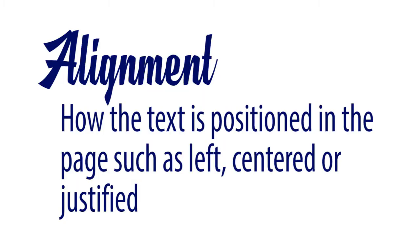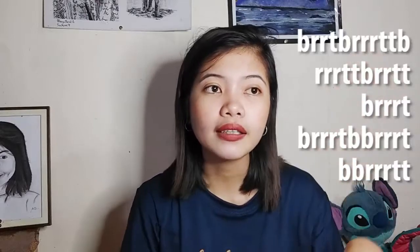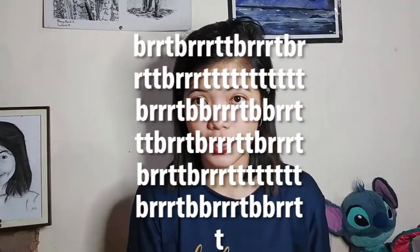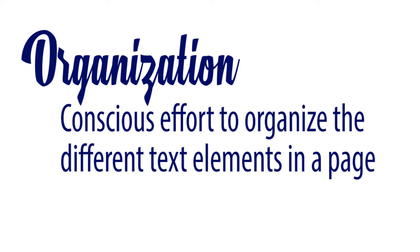Fourth is alignment — how the text is positioned on the page, such as left, centered, right, or justified. Next, we have organization — the conscious effort to organize the different text elements on a page, meaning how you arrange the elements so that your audience is not confused with the information inside a page.